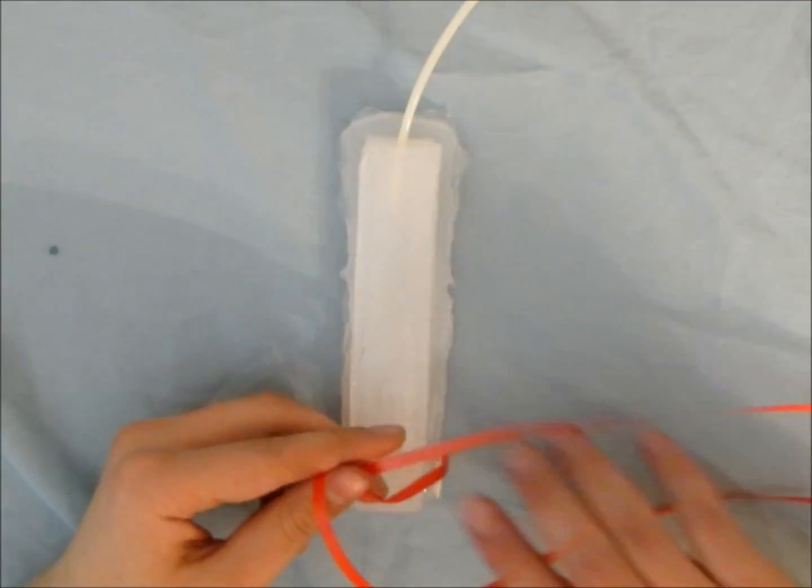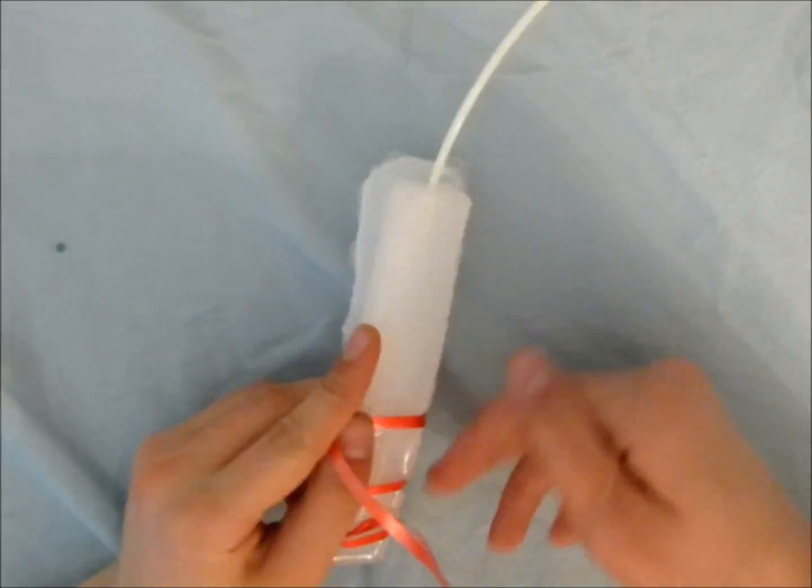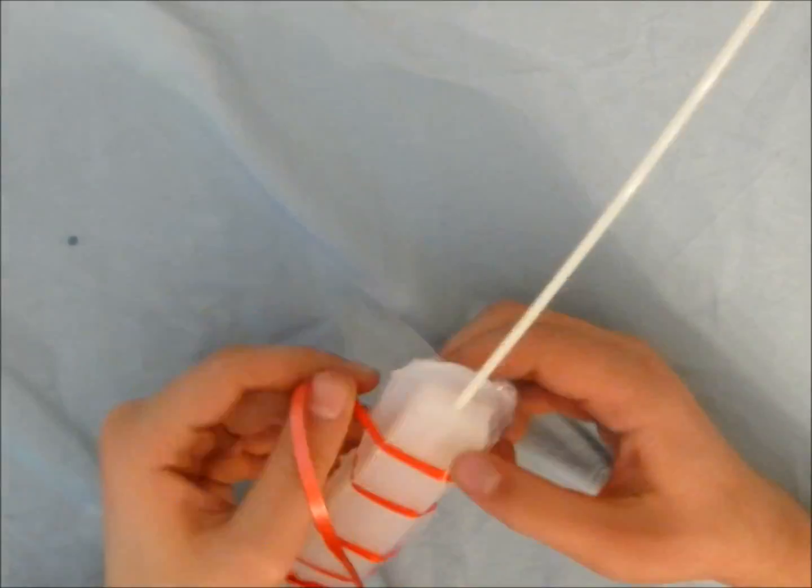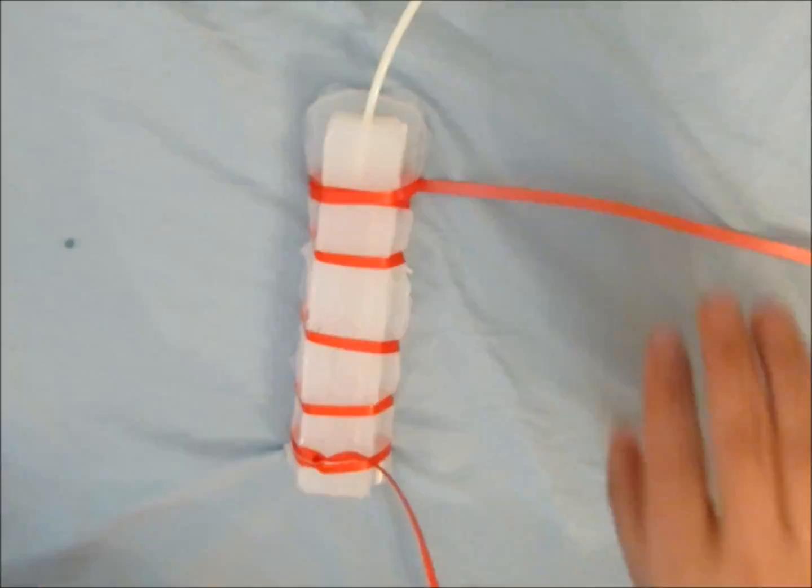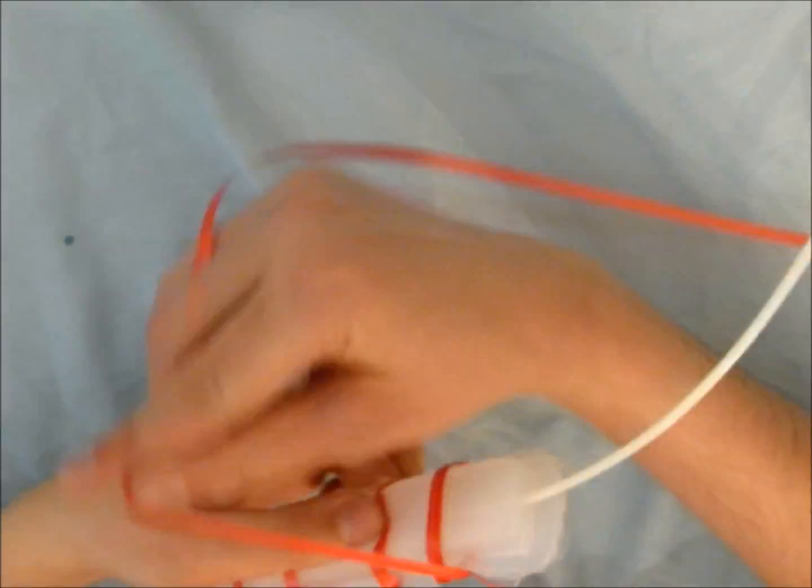Cut about 20 feet of ribbon and tie the center to one end of the robot. Wrap one end of the ribbon up the robot counterclockwise and the other clockwise. It is vital that the two sides of the ribbon are wound in opposite directions so that the robot bends properly.